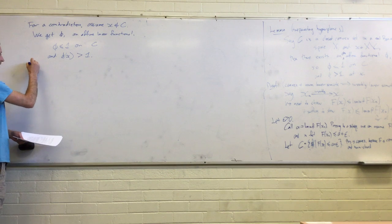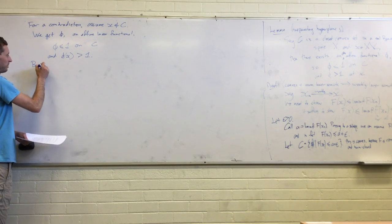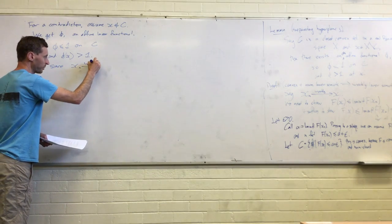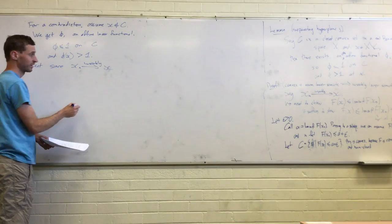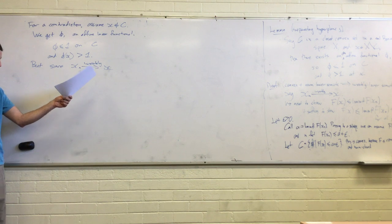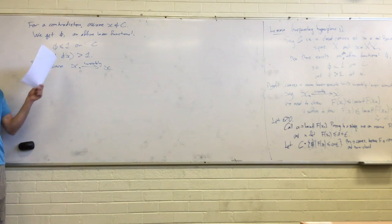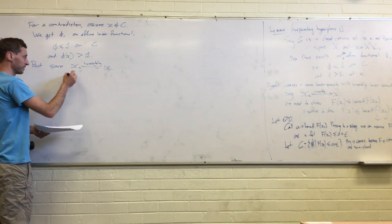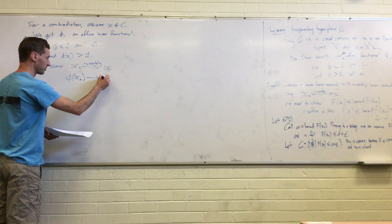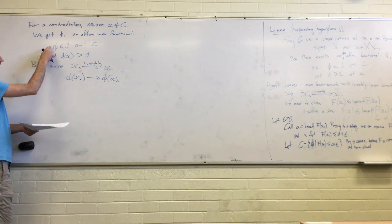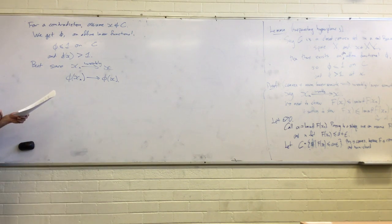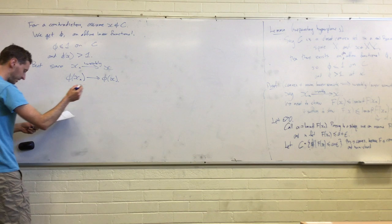Well, we've got now everything we need to produce this affine functional. Okay. And what do we have? Well, phi is less than or equal to one on C. And phi strictly greater than one at x. But since the xn is converging weakly to x, that in particular means that every linear functional applied to xn converges to the linear functional applied to x.